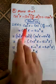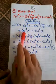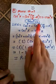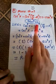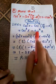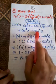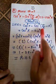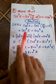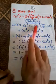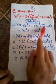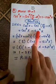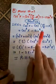Left hand side: cosine to the power 4 of x. We know that pi over 2 transforms cosine into sine, so cosine to the power 4 of (π/2 minus x) equals sine to the power 4 of x.